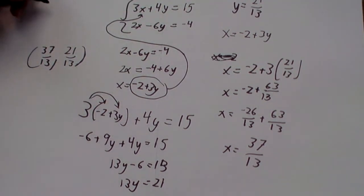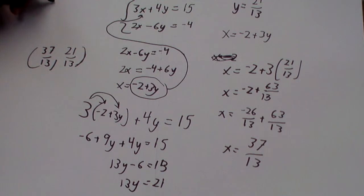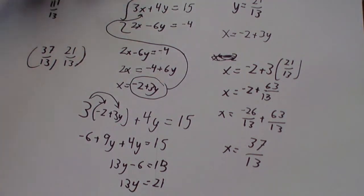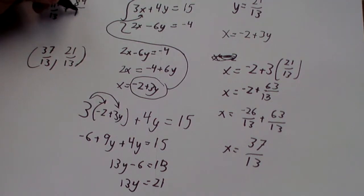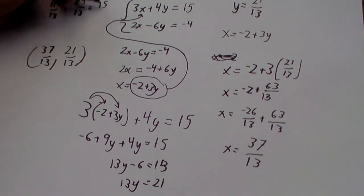Alright, 3 times 37 is 111. So, that's 3x plus 4 times y is going to be 84 over 13.